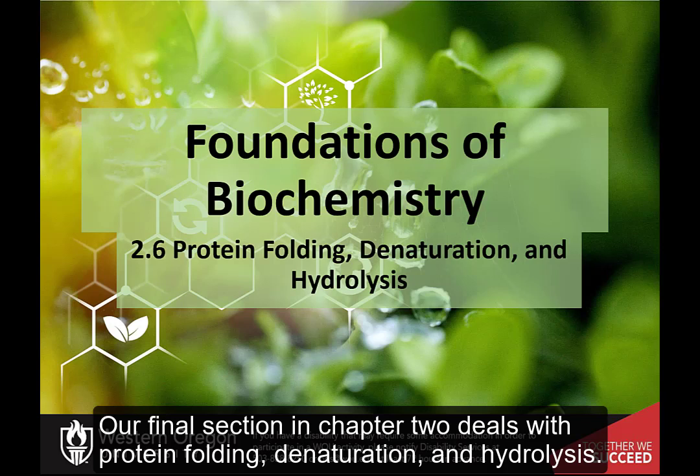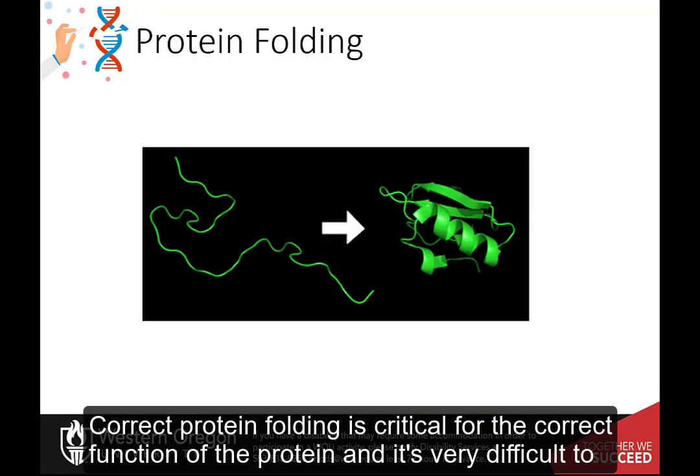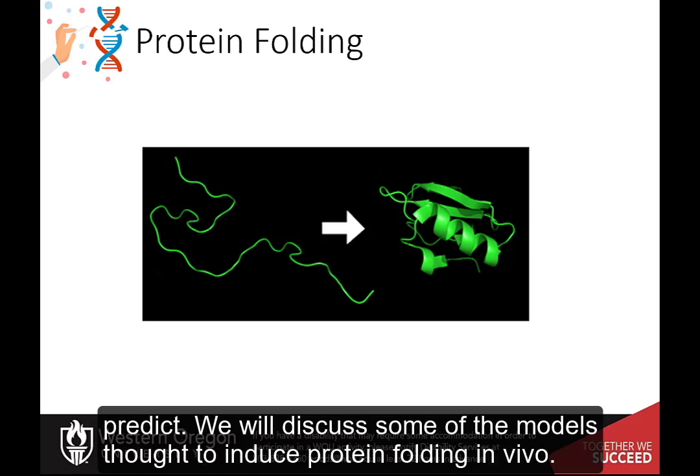Our final section in Chapter 2 deals with protein folding, denaturation, and hydrolysis. Correct protein folding is critical for the correct function of the protein and is very difficult to predict. We will discuss some of the models thought to induce protein folding in vivo.